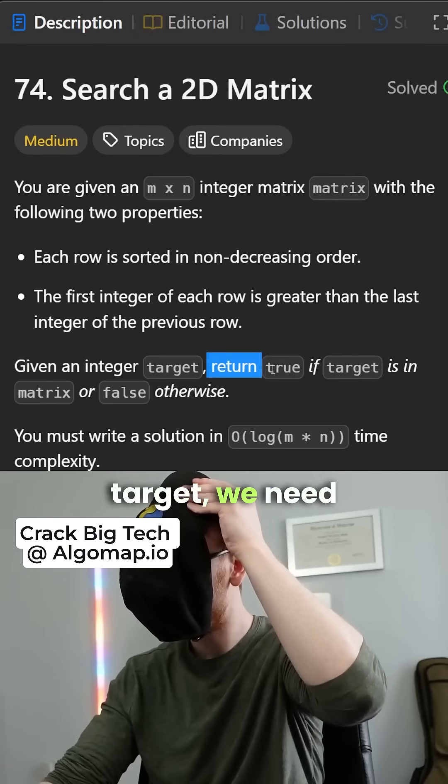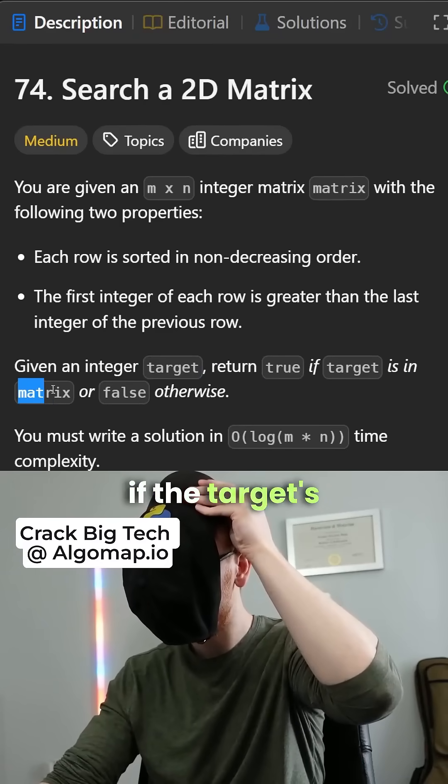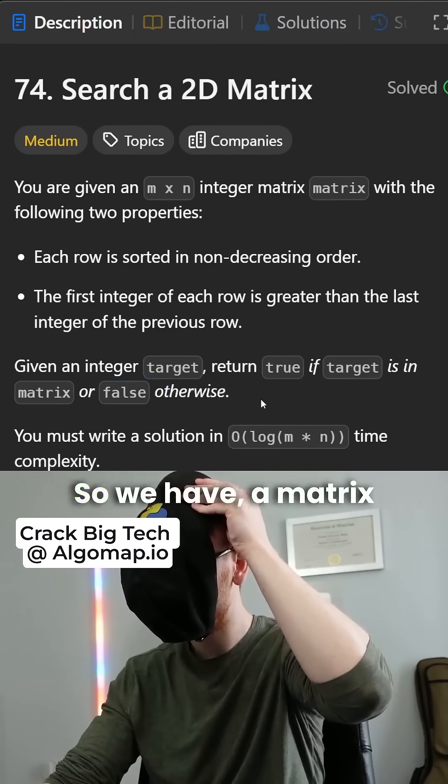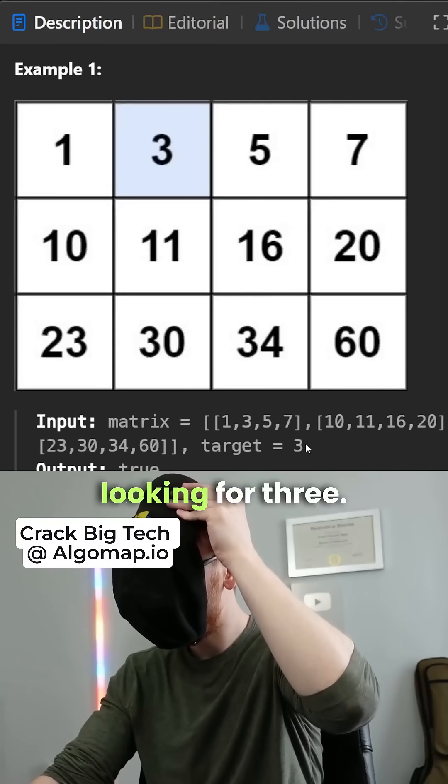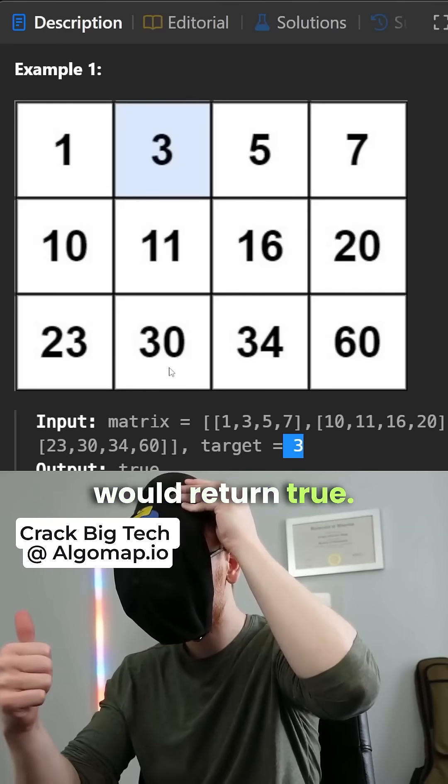Given an integer target, return true if the target's in the matrix and false otherwise. We have a matrix like this, and we're looking for three. Clearly it's in the array, so we would return true.